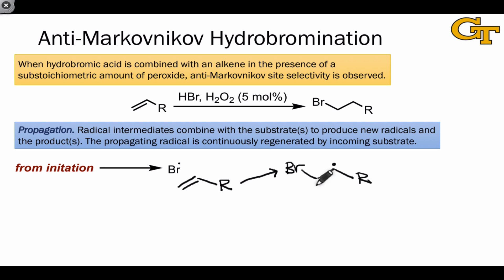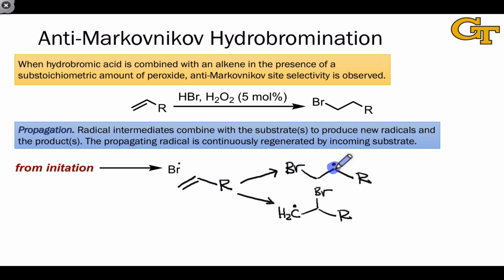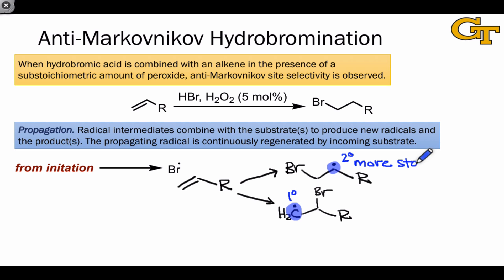Here's the intermediate that follows addition of bromine to the less substituted carbon, and here's the intermediate that follows addition of bromine to the more substituted carbon. Which radical is more stable? Consider the difference between the two: this radical is located at a secondary carbon, and this radical is located at a primary carbon. Radical stability trends parallel those of carbocations, and secondary cations are more stable than primary cations, so analogously, the secondary radical is more stable due to inductive effects than the primary radical.